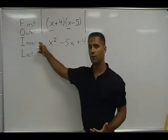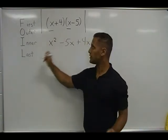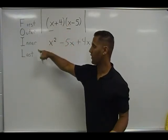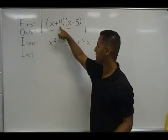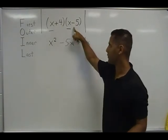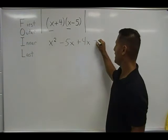And of course, we move on to our last terms. Now we started with the first terms, which are the first terms inside each set of parentheses. So of course, the last terms are the last terms in each set of parentheses. In this case, positive 4 and negative 5, which gives us a product of negative 20.